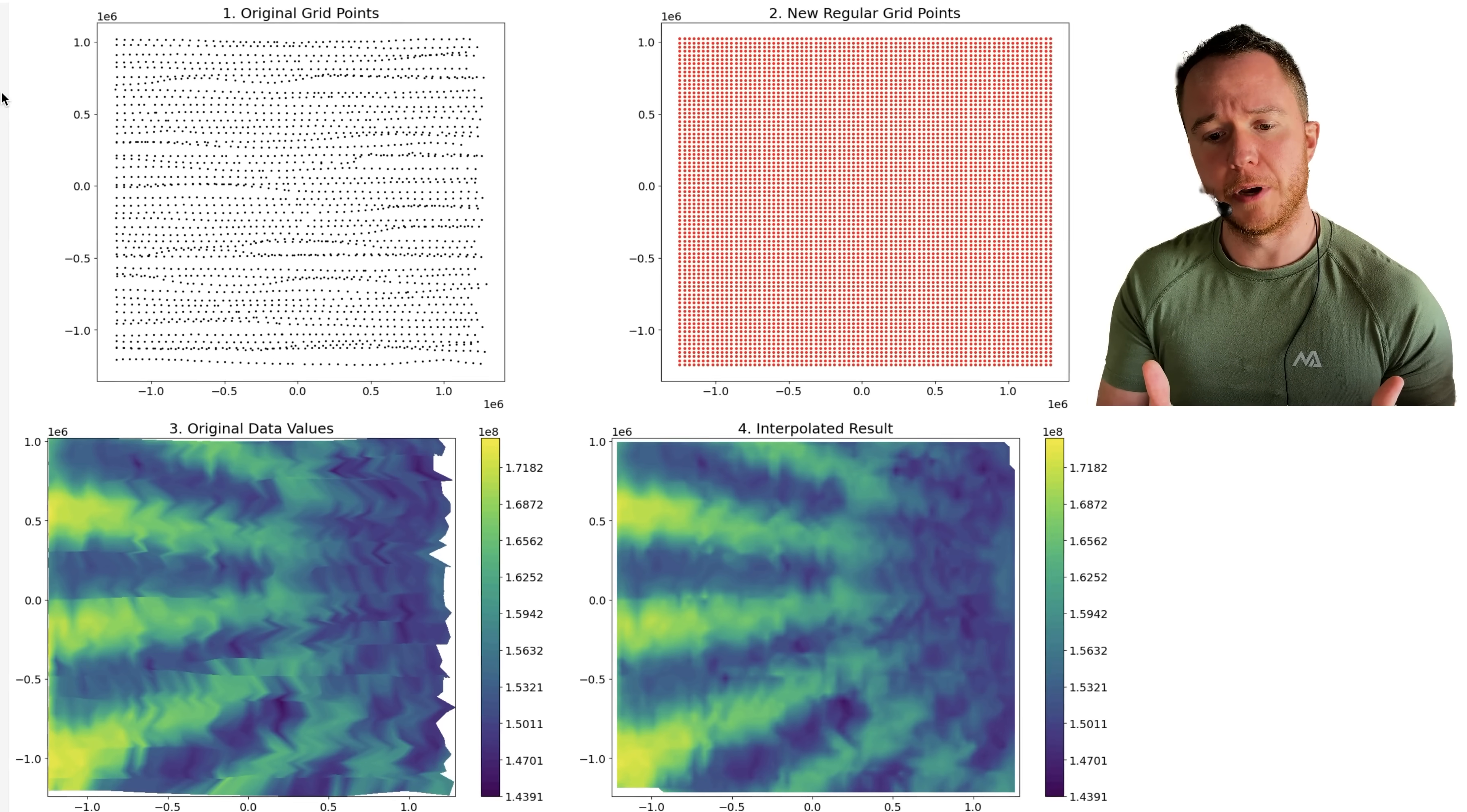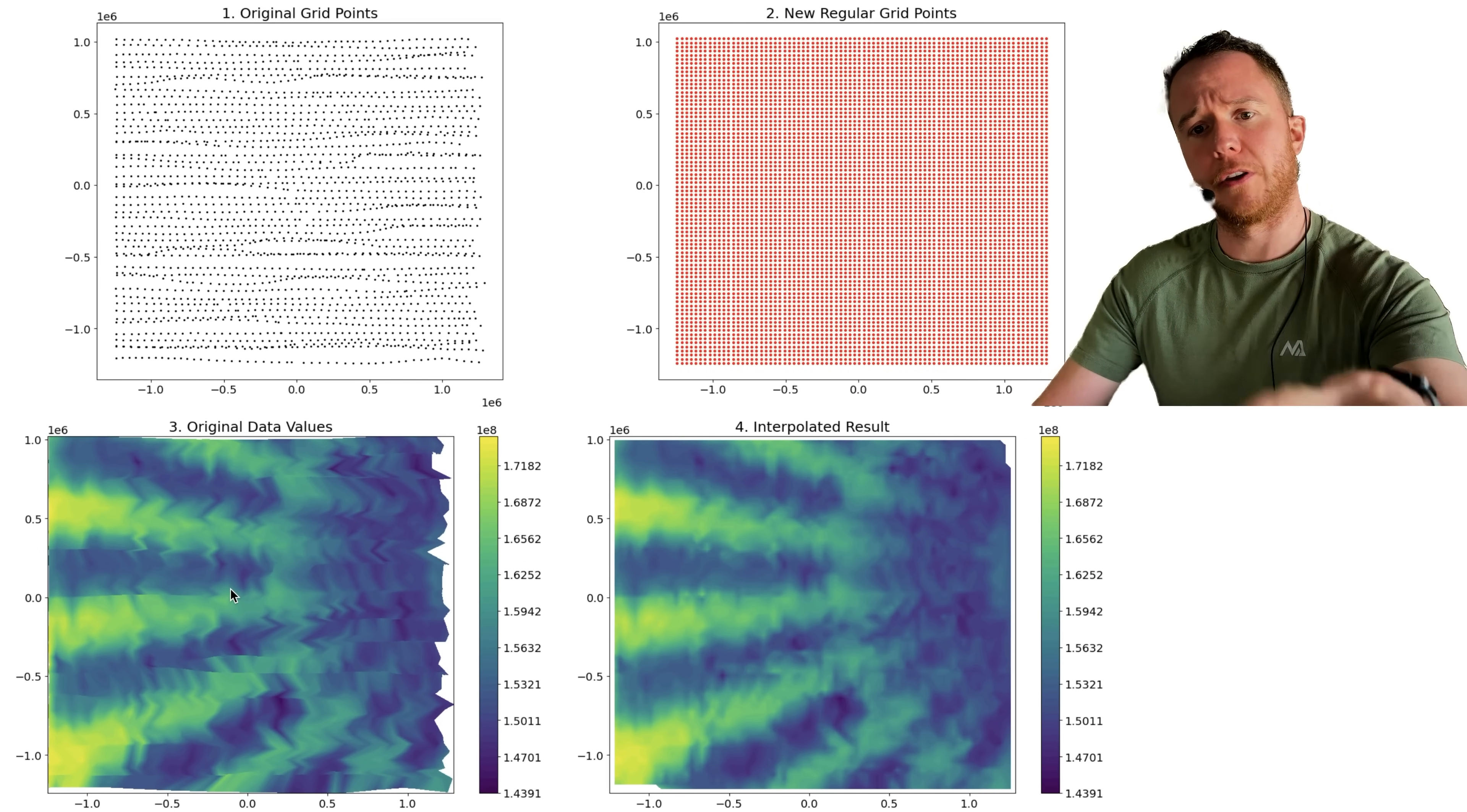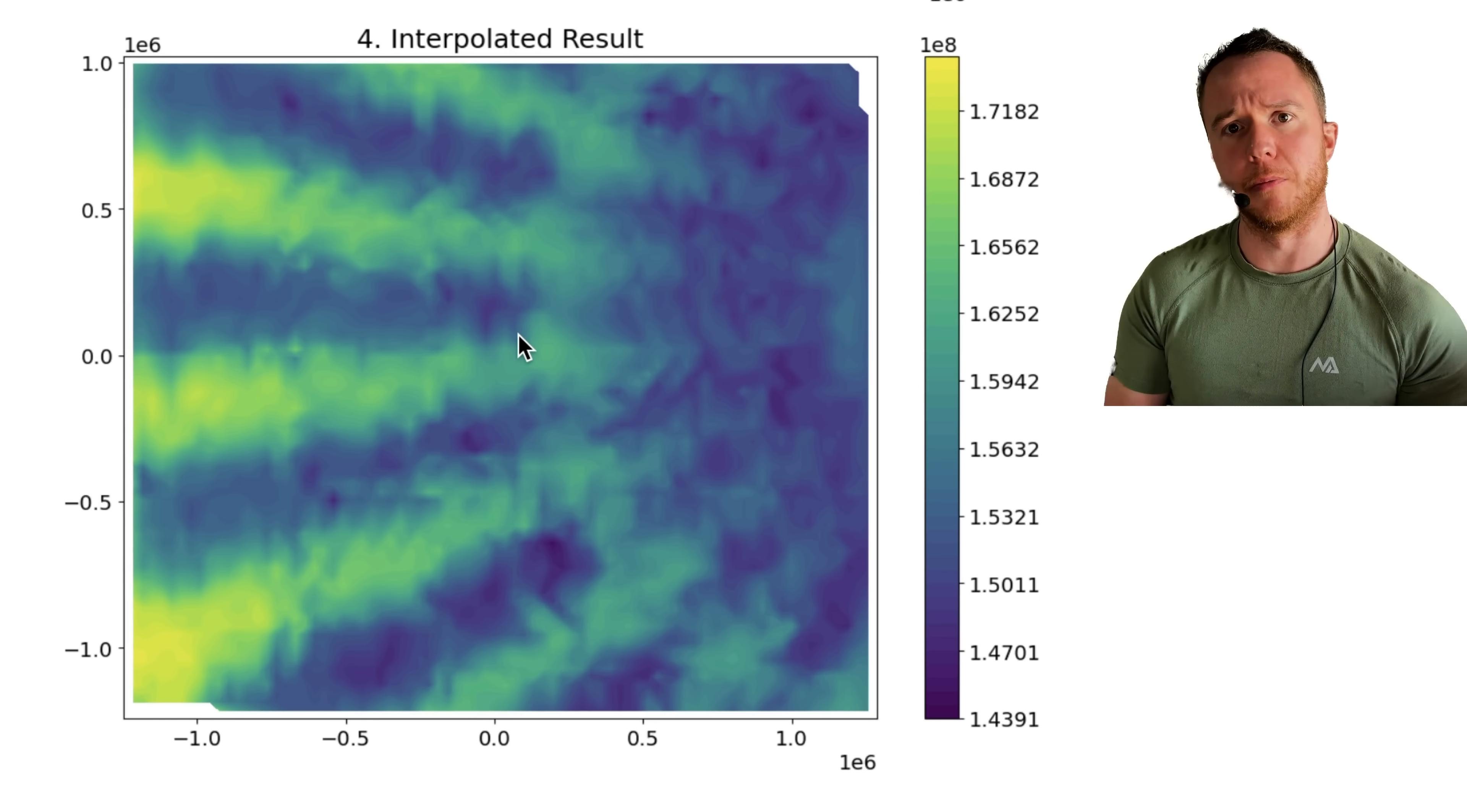But when you then want to create a heat map of that city and just plot it the way it is, you'll get some lines and artifacts in the data, so it's not that easy to plot. So it would be better if we interpolate first from this grid to a regular grid, interpolate all the data values, and then plot it. You end up with a smooth plot without artifacts. So let's have a look how we can do that in Python.